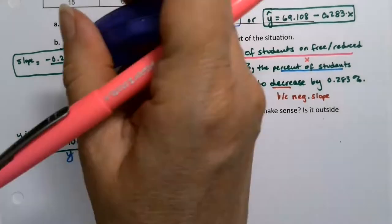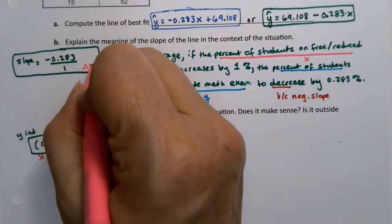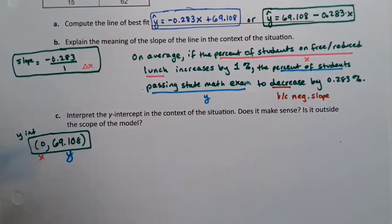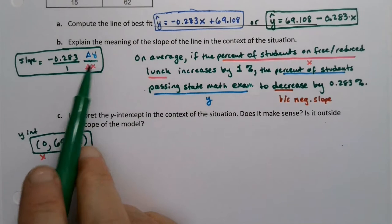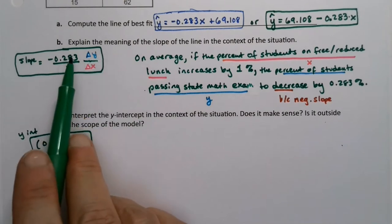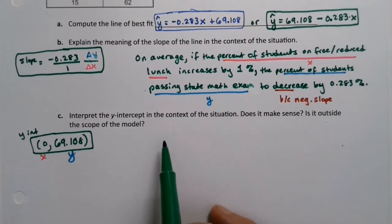I can change this so you guys can see this better. This is change in x on the bottom, and this is change in y on the top. And so you're using both numbers to write this interpretation. When x goes up by 1, y goes down by 0.283. When x is 0, what would it mean for x to be 0?